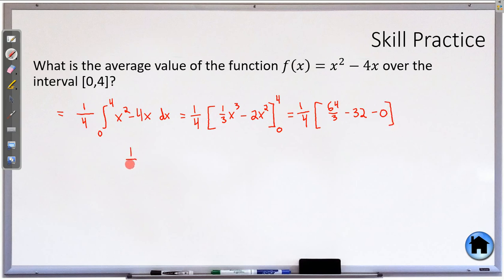So 1/4 times, let's see. The 0 doesn't matter, but we've got to subtract these. So let's get a common denominator here. 64/3 minus, so we need it to be a 3 on the bottom, so multiply that times 3 and you get 96. Times 64 minus 96 will be negative 32. Simplify here and you will get -8/3 as our average value, which is -2.66 repeating.